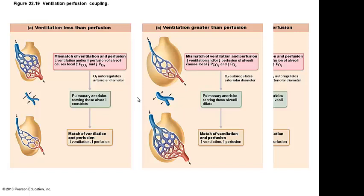The opposite will happen when ventilation is greater than perfusion. In order to have proper exchange at the alveoli, the arterioles are going to dilate — rather than constrict, they're going to do the opposite — so that we can match ventilation and perfusion. Air coming in versus air being distributed to the capillary beds.